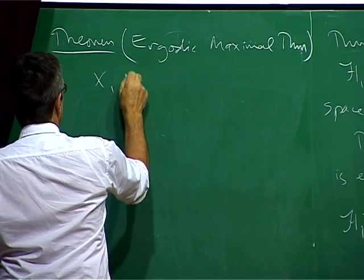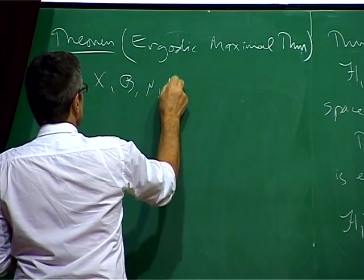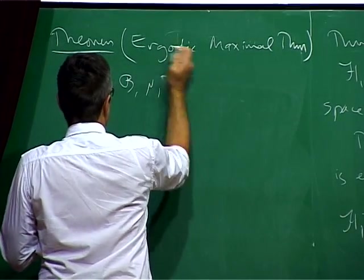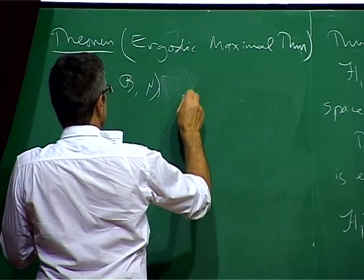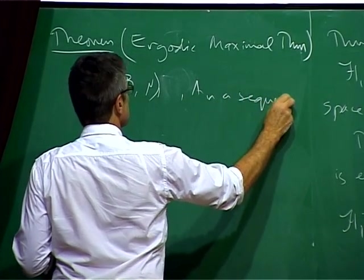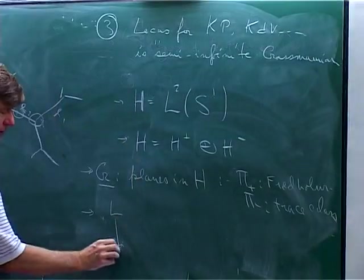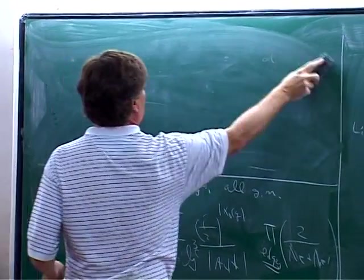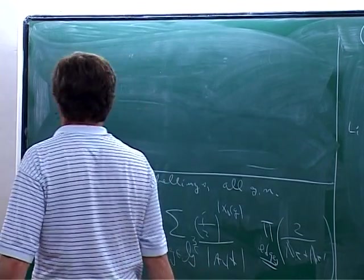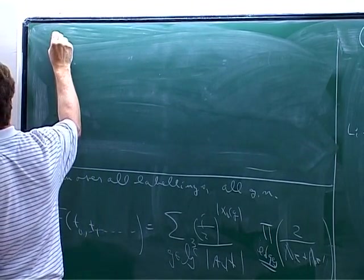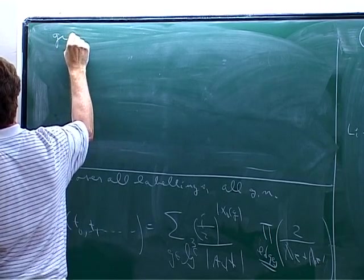So using this theorem we can then prove that our next ergodic theorem which is the ergodic maximal theorem. So we've got X B mu T as above, oh no it's just X B mu measure space, we've got AN the sequence of operators.